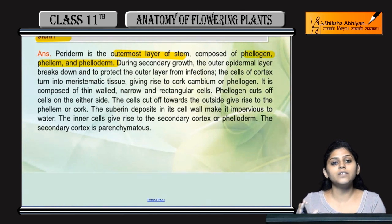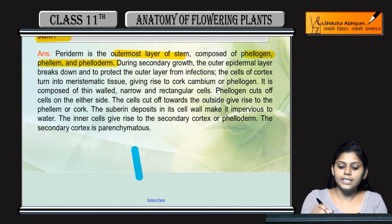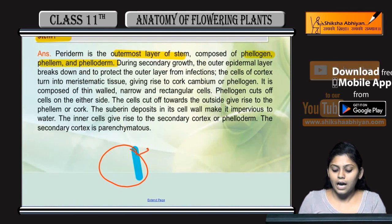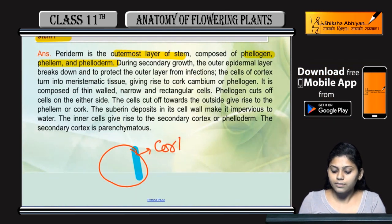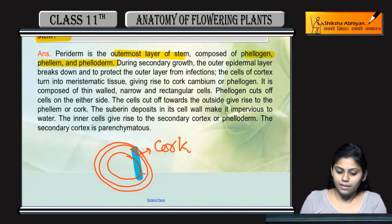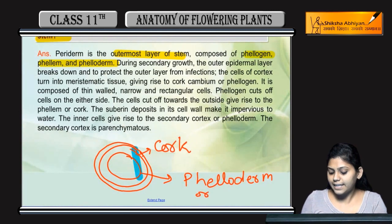But when the epidermal layer breaks, then secondary growth gives rise to a layer called phelogen. Phelogen produces cells on its outer side and inner side. The outer side is called cork and the inner side is called phelloderm. Phelloderm is also known as secondary cortex.